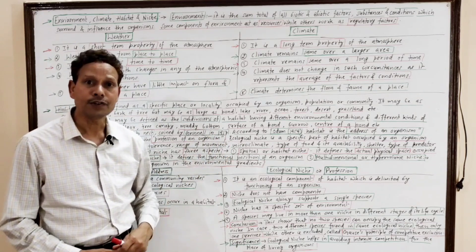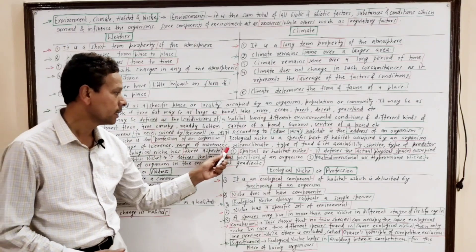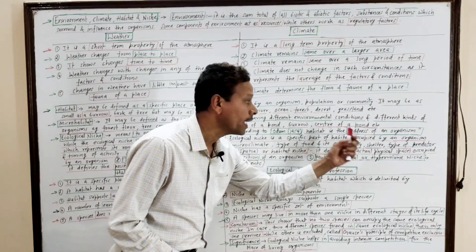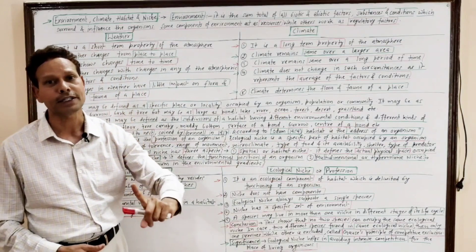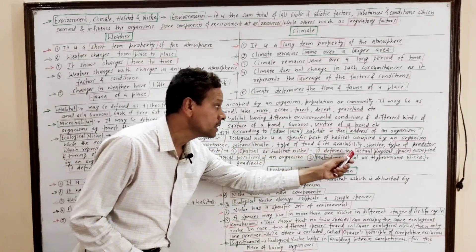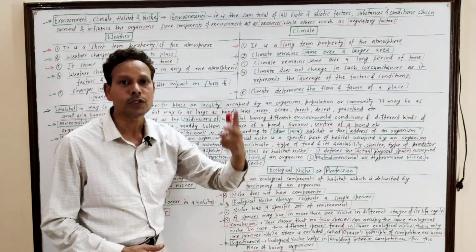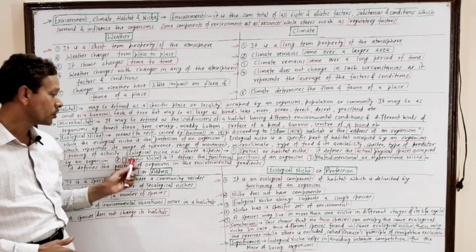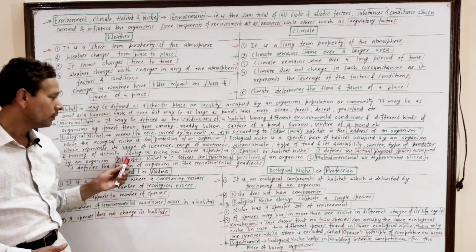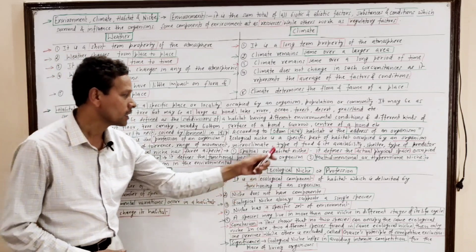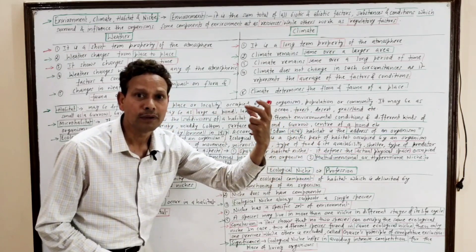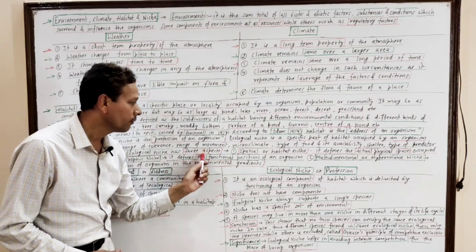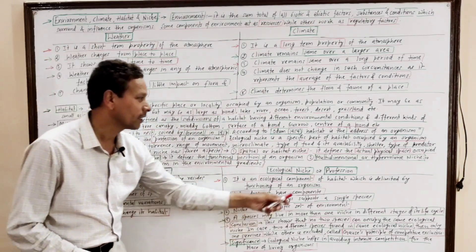Ecological niche has three aspects. First is the spatial or habitat niche, which defines the actual physical space occupied by an organism. Second is the trophic niche, which represents the functional position of an organism — unlike the spatial niche which defines physical space, the trophic niche defines functional role.